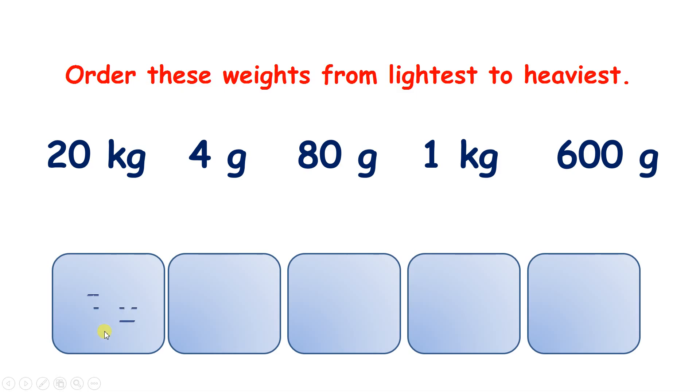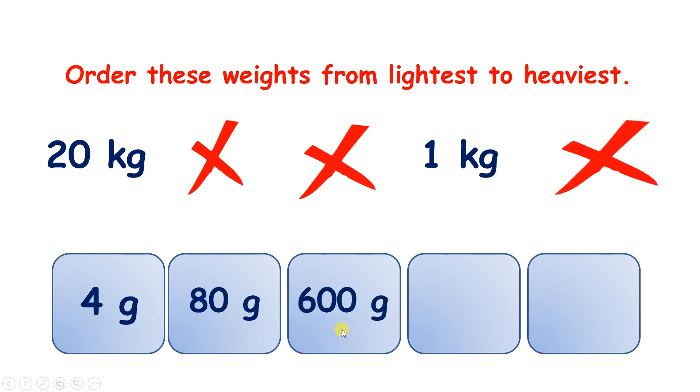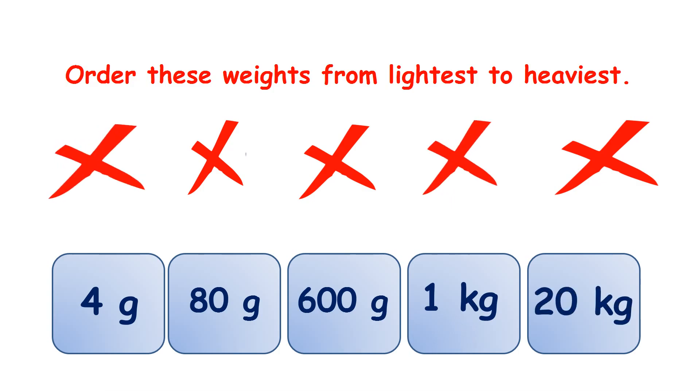So let's start by finding the smallest measure in grams. We have 4 grams, then 80 grams, then 600 grams. Now we have 1 kilogram and 20 kilograms, so 1 kilogram is the next lightest, and then 20 kilograms is the heaviest.